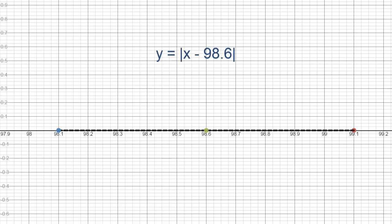As a function, the equation is y equals the absolute value of x minus 98.6. The x-axis corresponds to the temperature of the person in question. What does the y-axis represent?